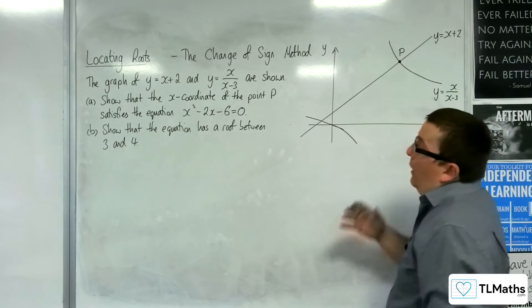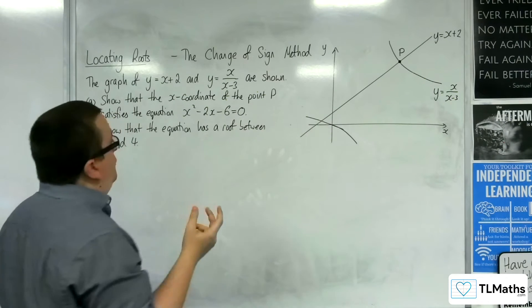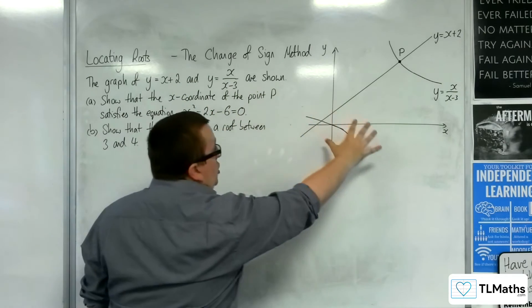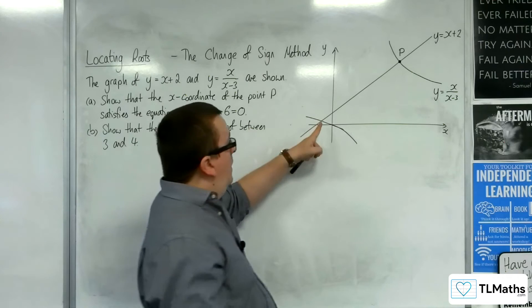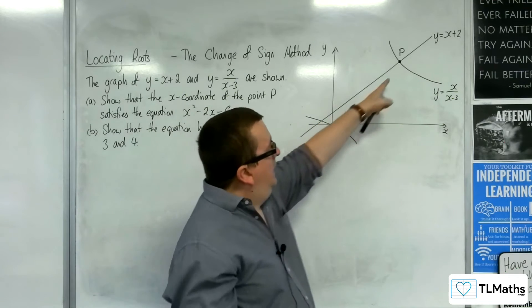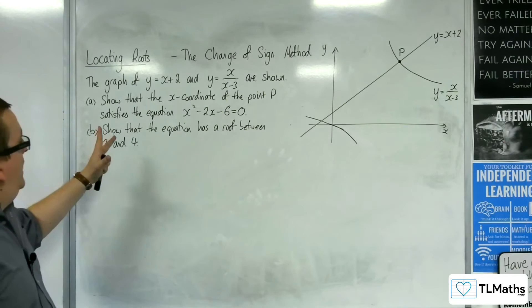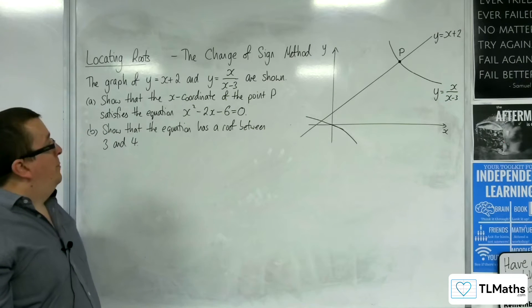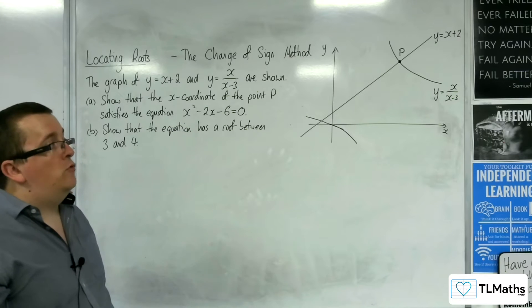In this problem, we have the graph of y = x + 2 and y = x/(x - 3) shown in this diagram. They intersect twice. You can see a point here of intersection, and they intersect here at point P. Part A shows that the x-coordinate of point P satisfies the equation x² - 2x - 6 = 0.